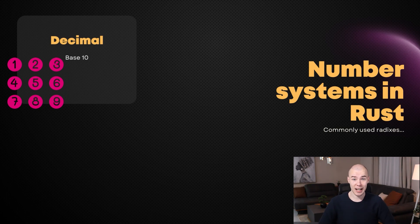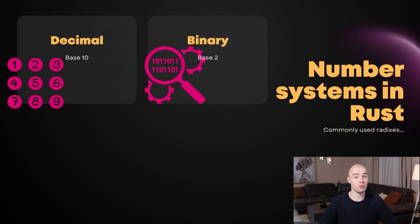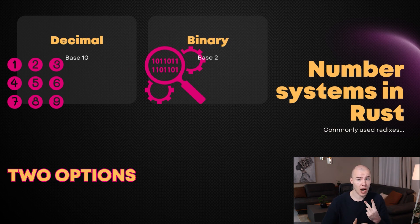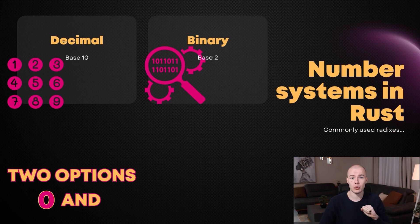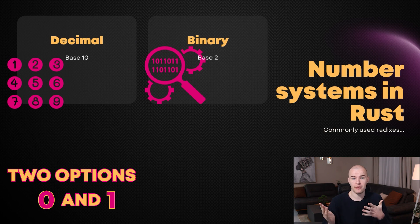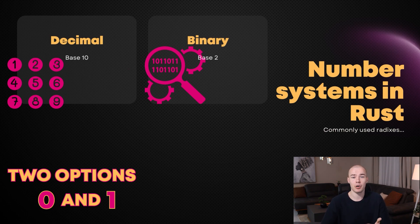The second number system is going to be binary, and this one we already covered in great detail in previous videos. Binary is going to be represented with only two options — you have 0 and 1 — and because of that the base of this number system is going to be number 2, because we have two different options that we can use to represent any number.